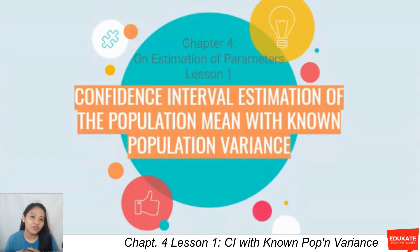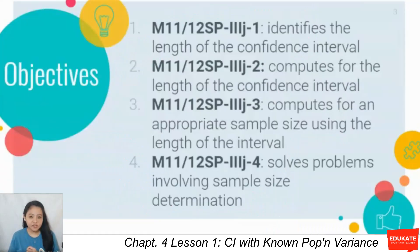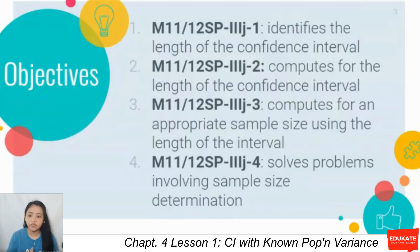We are now moving on to chapter 4 on estimation of parameters. The first lesson under chapter 4 is confidence interval estimation of the population mean with known population variance. Our main objectives to hit for today are 4: identify the length of the confidence interval, compute for the length, compute for an appropriate sample size, and solve problems involving sample size determination.